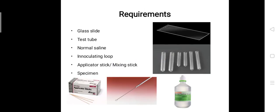To perform this coagulase test, we are going to need the reagents and materials such as glass slides, test tubes, inoculating loop, applicator stick or mixing stick, and also most importantly normal saline and the specimen. The specimen, human or rabbit plasma with EDTA, is diluted 1:5 with normal saline.